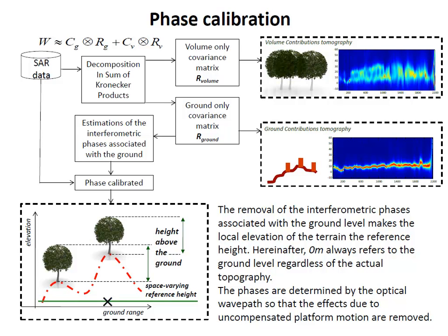Mathematically, we perform singular value decomposition, keeping only the maximum eigenvalue. This allows us to describe the volume contribution as seen in the tomogram, and separately describe the ground-only contribution. In the second step of phase calibration, we take the phase of this ground contribution and remove it from the original data, so that contributions in the vertical are referenced above the ground rather than to a fixed frame.